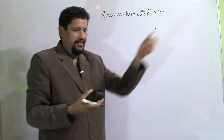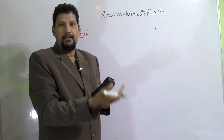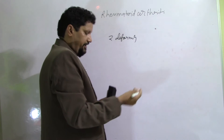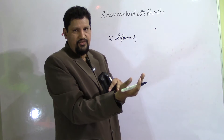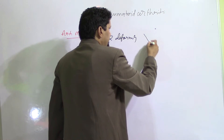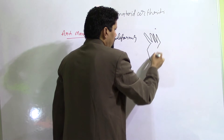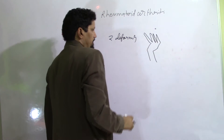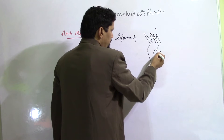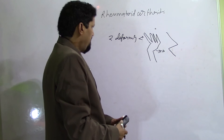There is also deformity of the wrist joint along with the metacarpophalangeal joints known as Z-deformity. In this, there is radial deviation of the wrist joint and at the same time ulnar deviation of the fingers, forming a Z-shape.